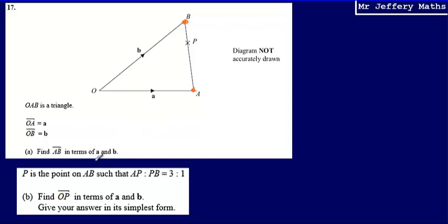In order to do that, when using vectors I can only travel along the lengths or vectors that I know. So I can't go directly from A to B along that line. I'm going to have to go from A back to O using the vector I know, and then from O to B using that vector.